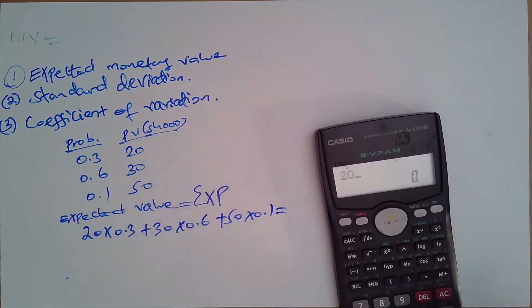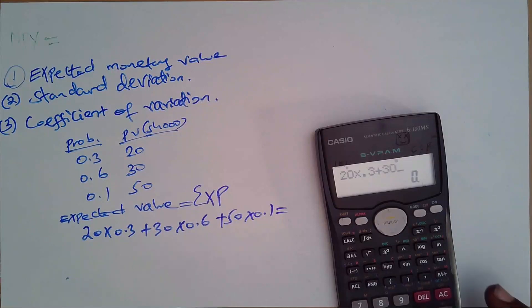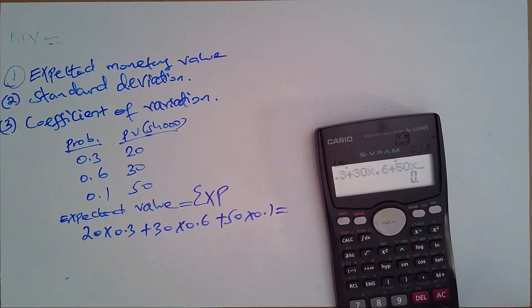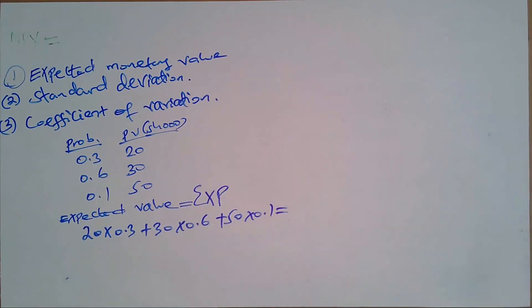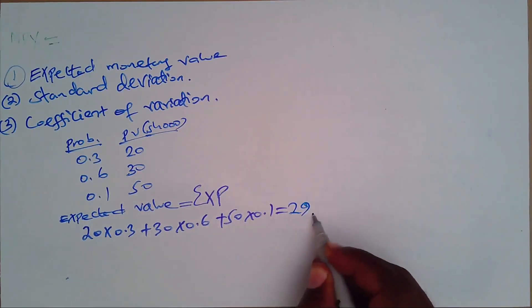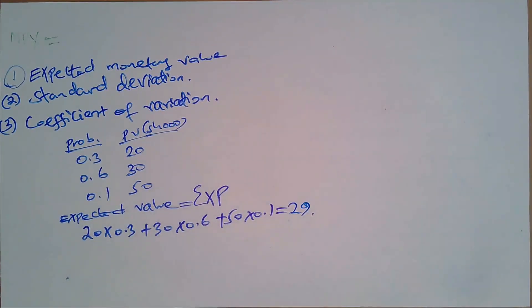So we calculate: 20 times 0.3, plus 30 times 0.6, plus 50 times 0.1, which gives us 29. So the expected value is 29 thousand shillings. That is what we call an expected value.